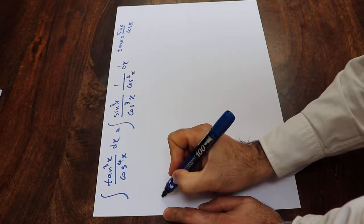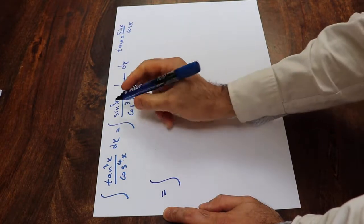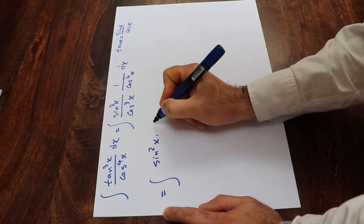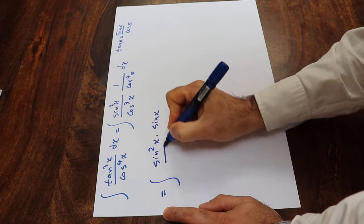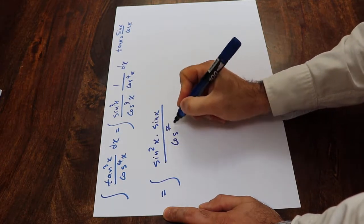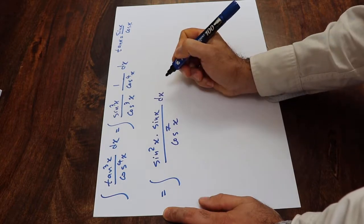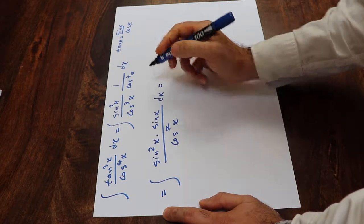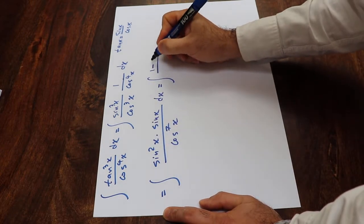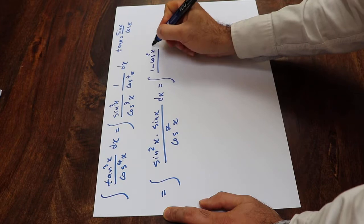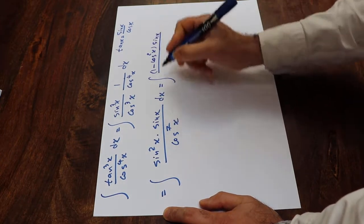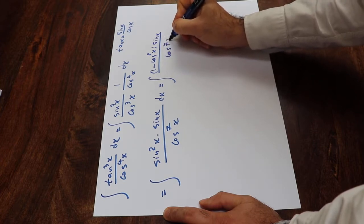So this one you can rewrite as the integral of: instead of sine³x I write sine²x times sine x, divided by cosine³x times cosine⁴x, which is cosine⁷x dx. From trigonometry we know that sine²x is equal to 1 minus cosine²x, times sine x divided by cosine⁷x dx.